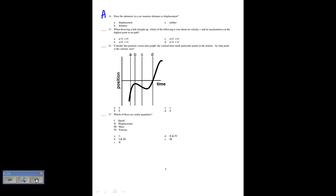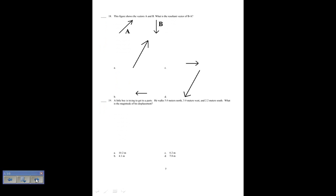Does the odometer in a car measure distance or displacement? Straight from the concept test — the answer is A, distance. When throwing a ball straight up, which is true about velocity and acceleration at the highest point? The velocity is zero but the acceleration is not zero, so number 15 is B. On a position versus time graph, velocity is zero when the slope is zero — that's at point B, so number 16 is B. Speed and mass are scalar quantities, so the answer for number 17 is B.